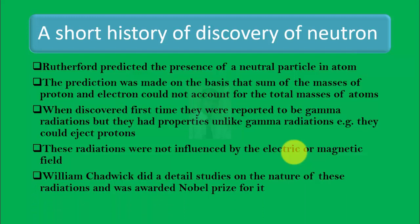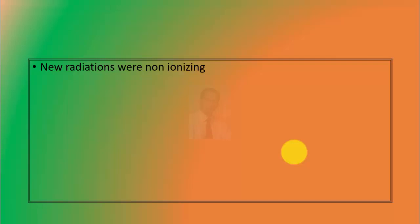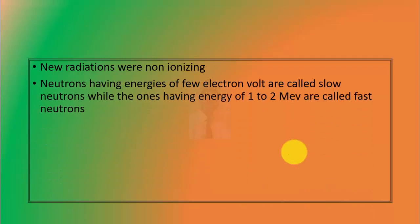New radiations were non-ionizing. Neutrons having energies of few electron volts are called slow neutrons while the ones having energy of 1 to 2 mega electron volts are called fast neutrons.